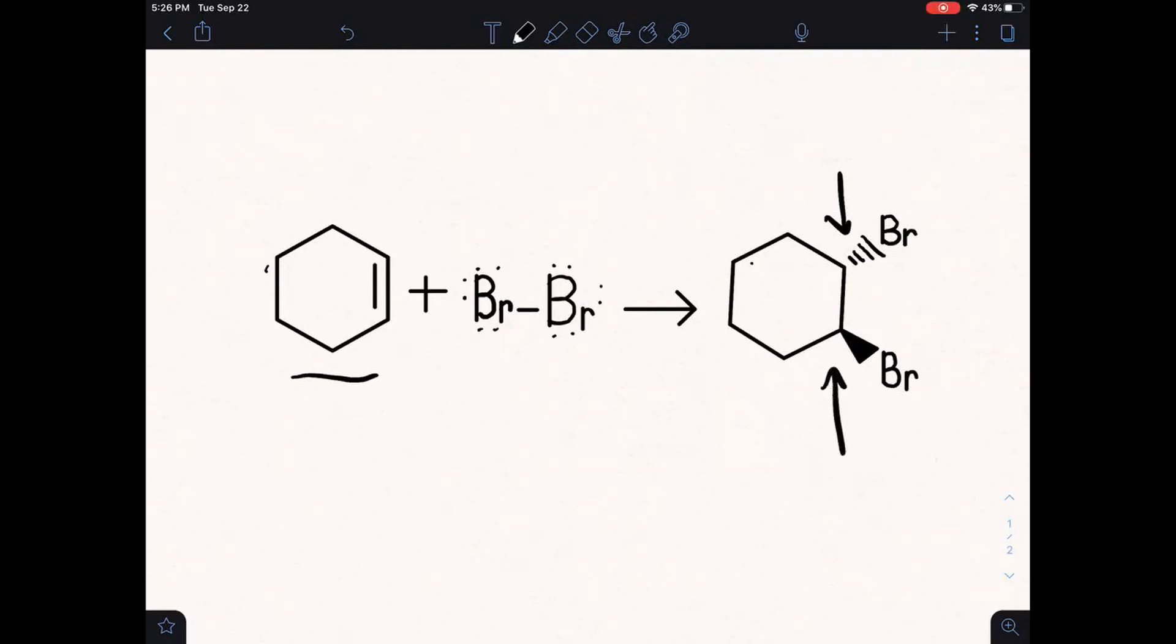These bromines are always going to attach anti to each other. One bromine is going to be positioned up and one bromine is going to be positioned down, but never going to be on the same side because of how this molecule reacts. This is stereoselectivity.